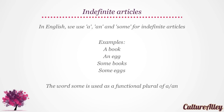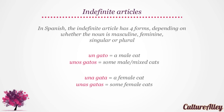Now let's look at the indefinite articles. In English, we use a, an, and some for indefinite articles. For example, a book, an egg, some books, some eggs. Note that some is used as a functional plural of a and an. In Spanish, the indefinite articles have four forms, depending on whether the noun is masculine, feminine, singular, or plural. Un gato is used to refer to a male cat, while unos gatos is for some male or mixed cats. Una gata means a female cat, while unas gatas is used to refer to some female cats.